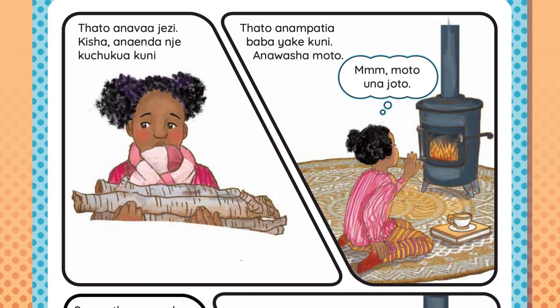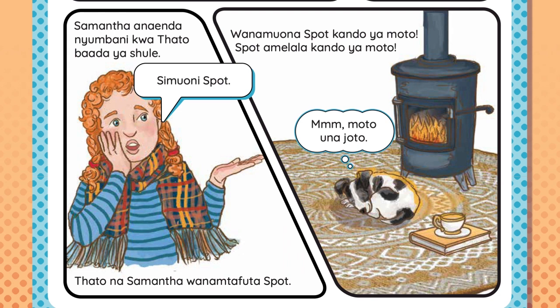Kisha, anaenda nje kuchukua kuni. Tato anampatia baba yake kuni. Anawasha moto. Hmm, moto unajoto. Samantha anaenda nyumbani kwa Tato baada ya shule. Simuoni Spot. Tato na Samantha wanamtafuta Spot. Wanamuona Spot kando ya moto. Spot amelala kando ya moto. Hmm, moto unajoto.